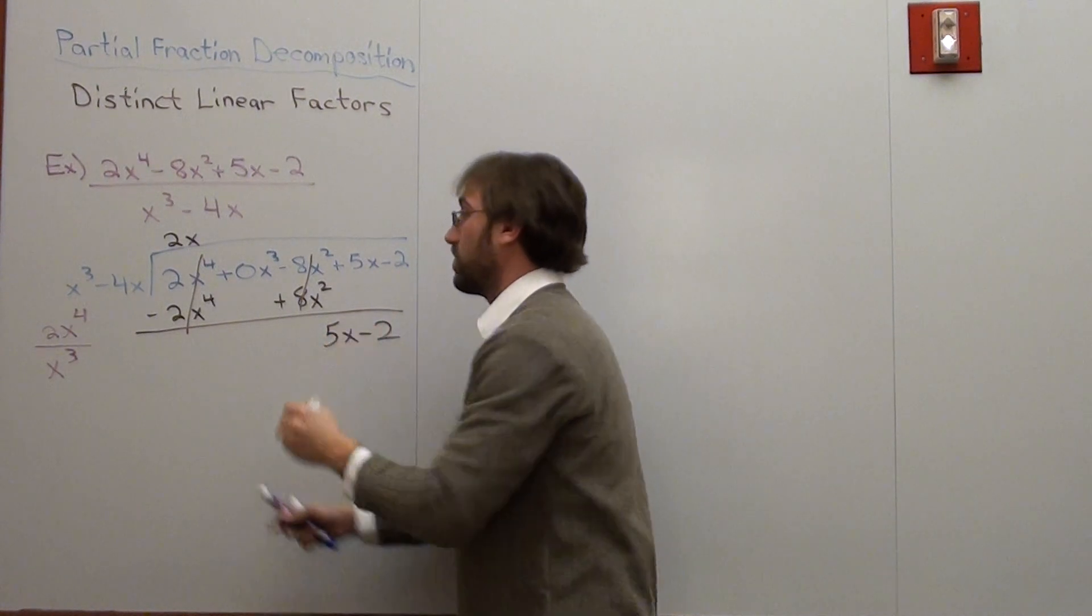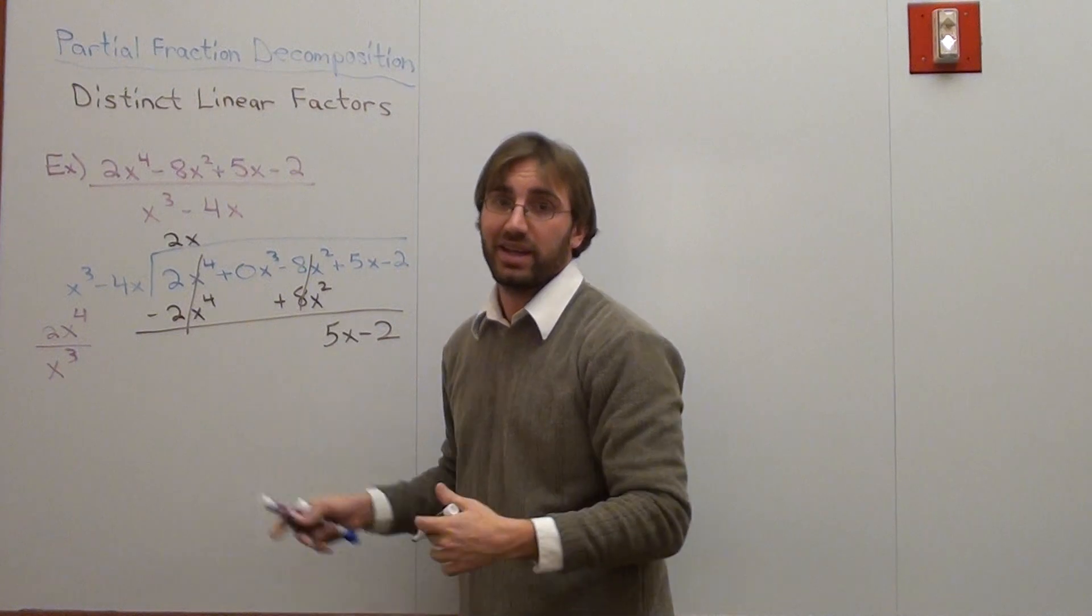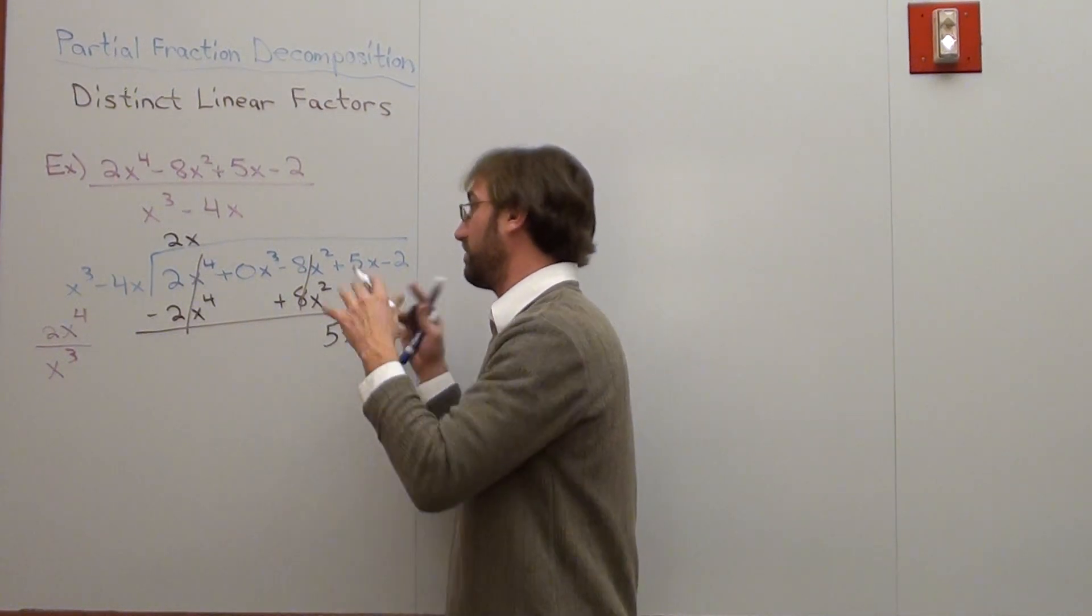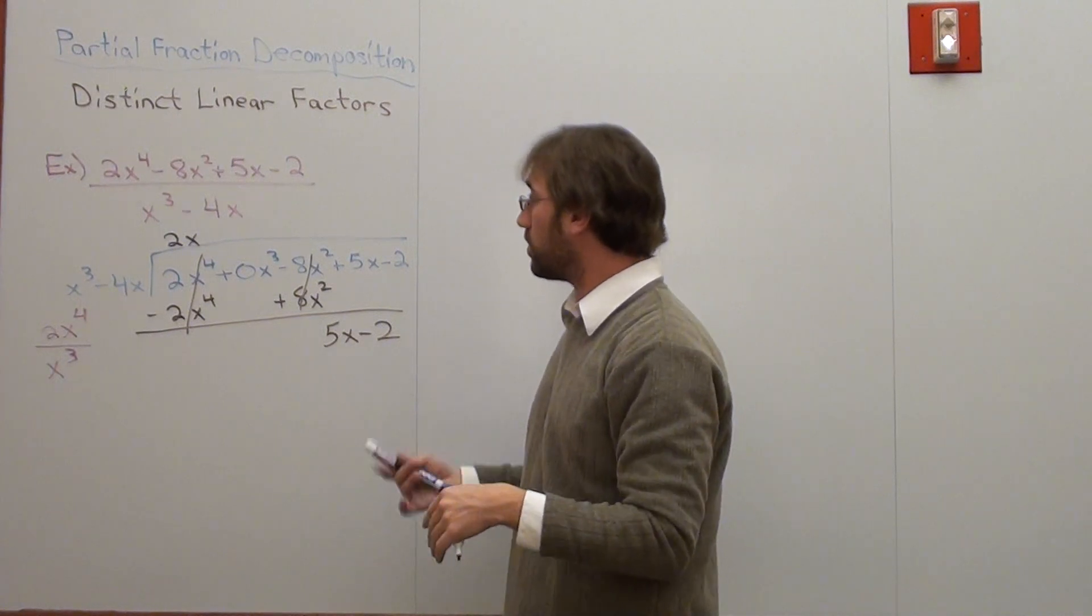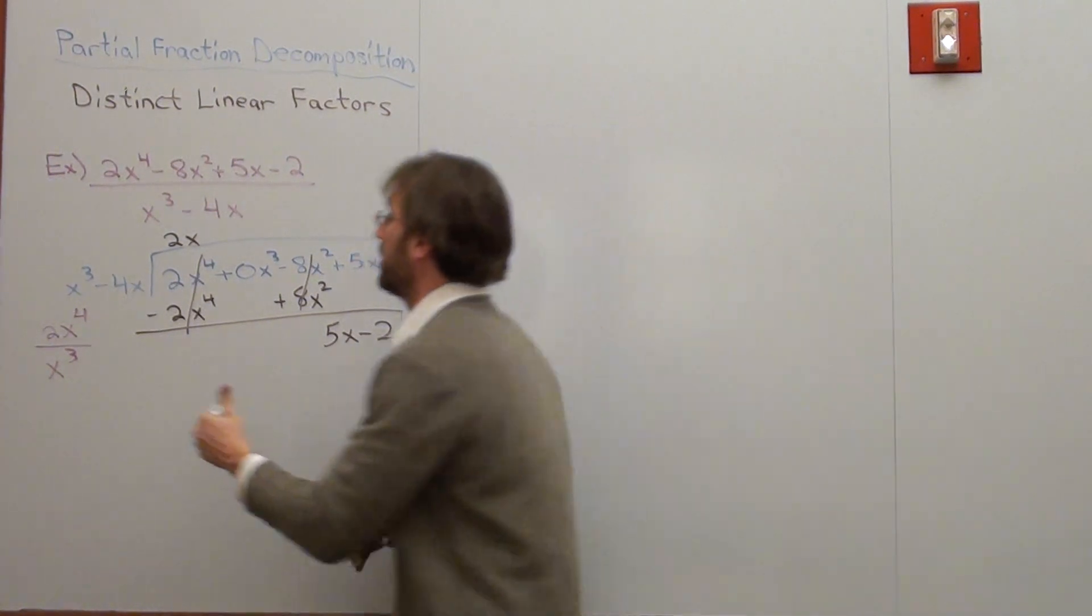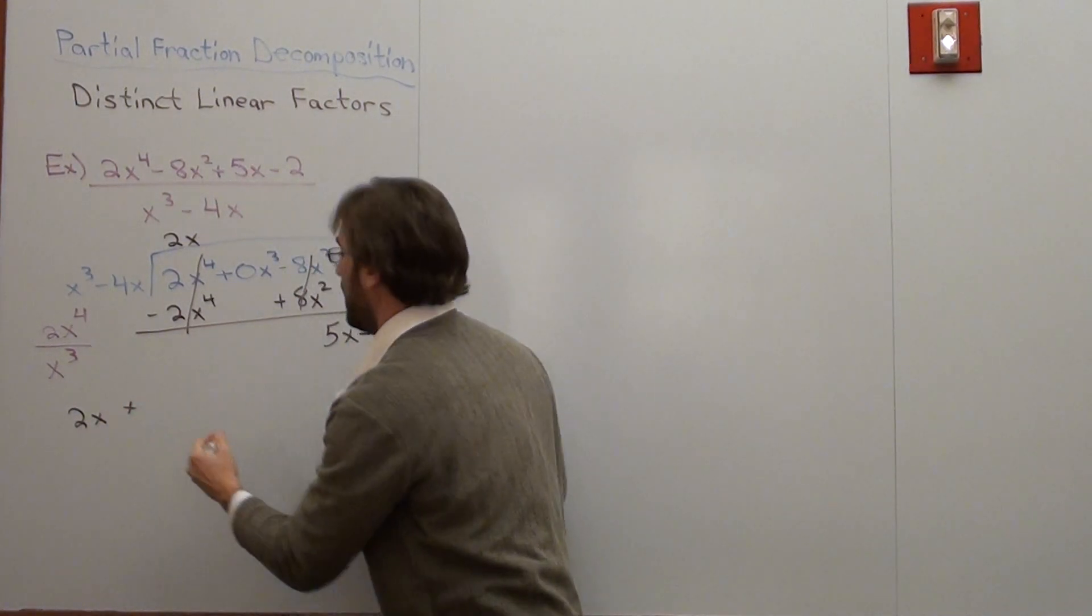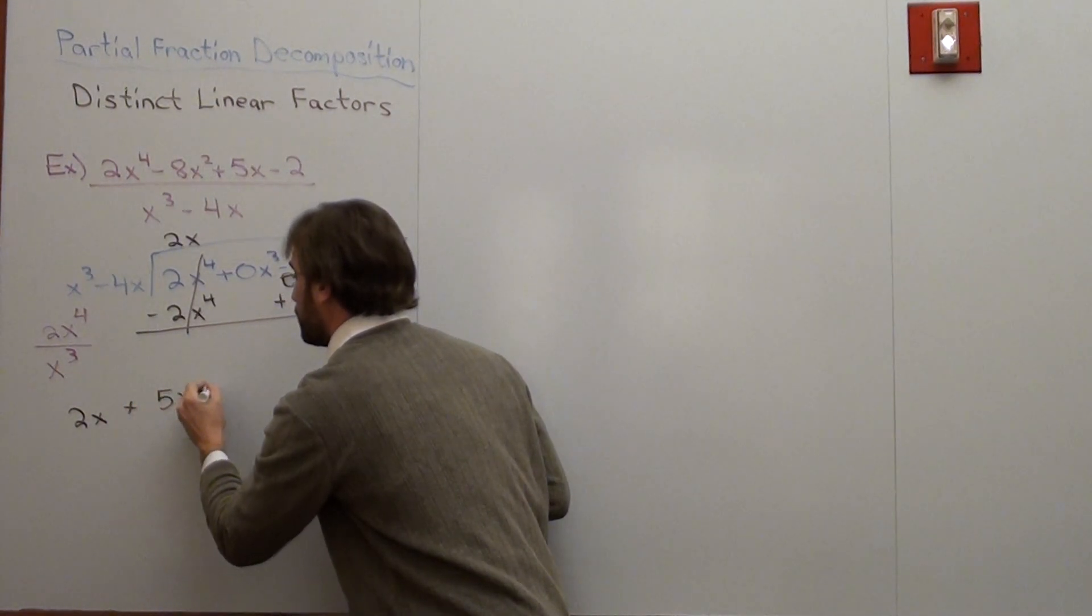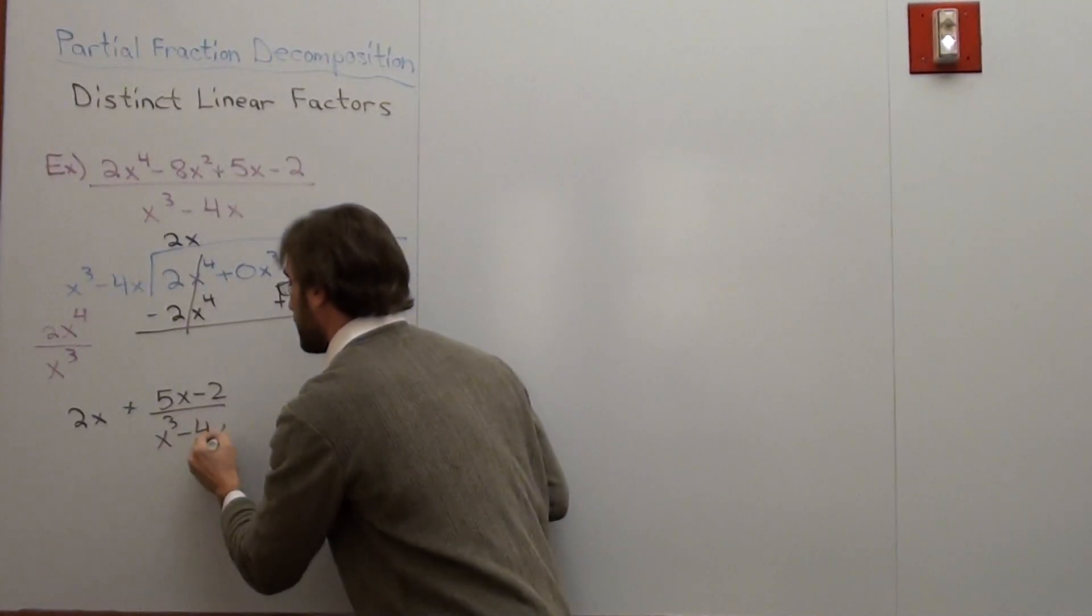And we've got 5x minus 2. Now x cubed times something doesn't equal 5x unless we're using negative exponents on variables, which we're not. That's the whole point. So what we got for an answer is this: 2x, and then we've got plus 5x minus 2 over x cubed minus 4x.